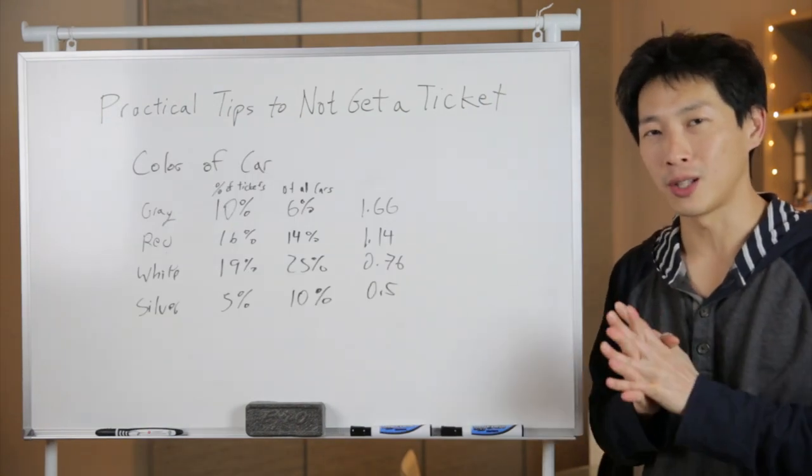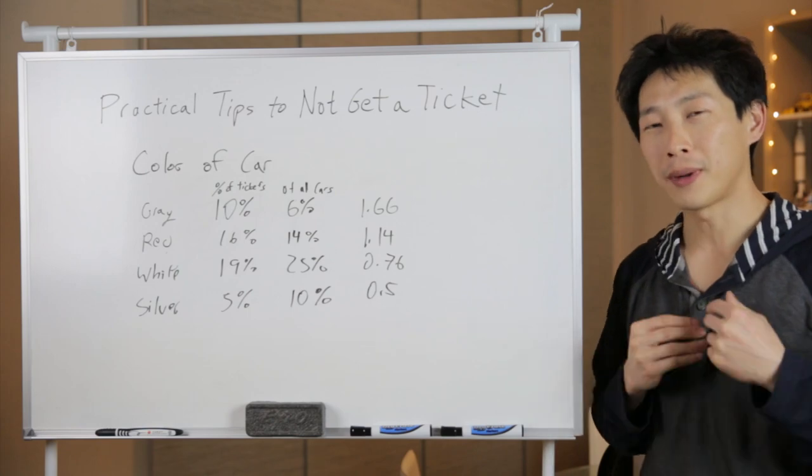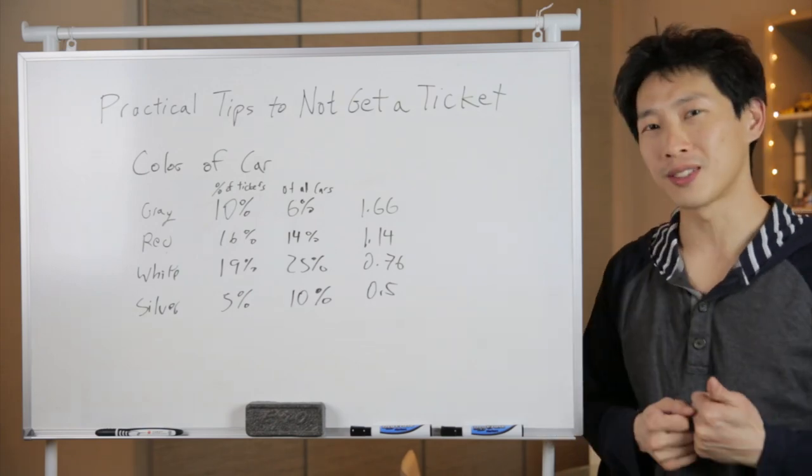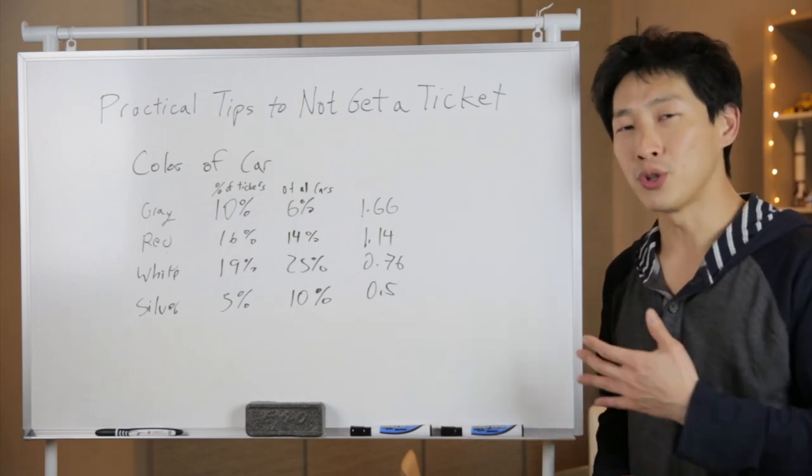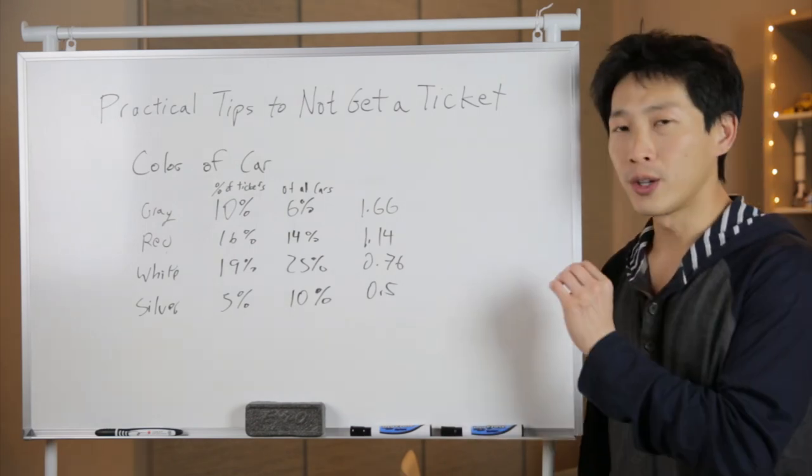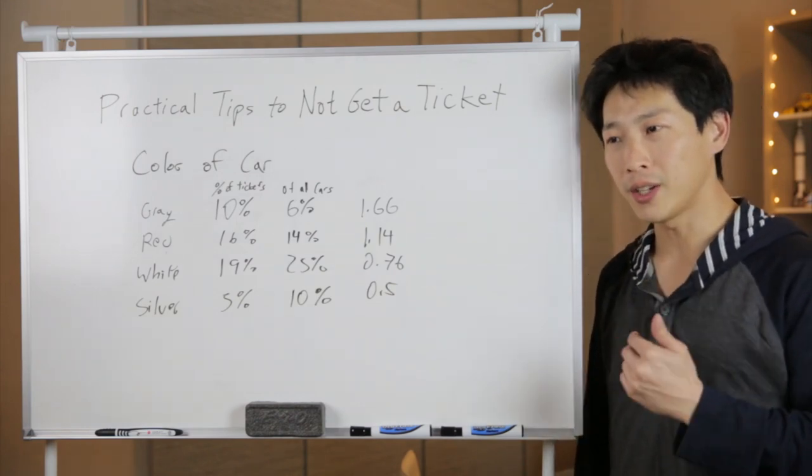The next practical tip is the color of your car. Now, you can't exactly choose the color of your car, but if you're about to buy a car, it's kind of good to know these statistics. This data here, I just found it online. It's a composition of two million tickets in the state of Ohio. Here are the four most ticketed cars of that state.